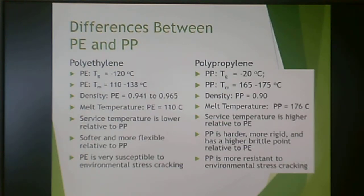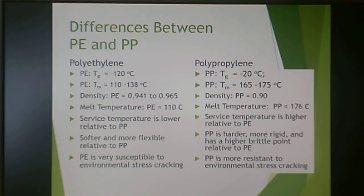Here are some of the differences. For polyethylene, the Tg is negative 120°C. For polypropylene, that goes up to negative 20°C. For polyethylene, the crystalline melting temperature, which affects your processing temperature, is 110 to 138°C, whereas for polypropylene it's 165 to 175°C.